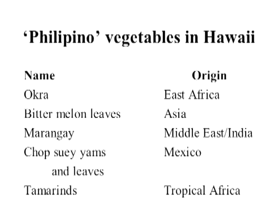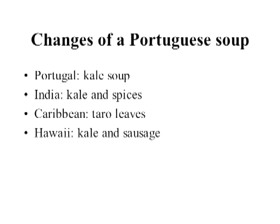Another example of the ways plants from diverse regions become adopted by a culture: a Hawaiian cookbook lists vegetables associated with Filipino cuisine — okra, bitter melon, moringa, chop suey yams, and tamarind — from diverse places, adopted into Filipino culture and now considered Filipino vegetables. As crops move across the world, recipes change and adapt too. A Portuguese soup originally made with kale in Portugal became kale and spices in India, was made from taro leaves in the Caribbean, and becomes kale and sausage in Hawaii — an example of culinary traditions changing as they move from place to place.